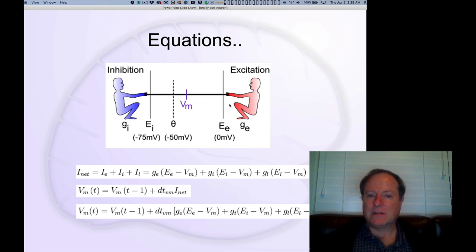It's like the inhibition has two players pulling against the one poor excitation that only has one player. And so what that means is that the equilibrium or driving potential, the reversal potential - those are all different words for the same thing.